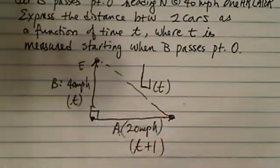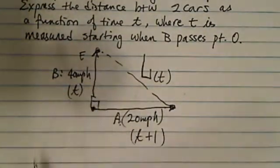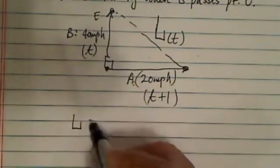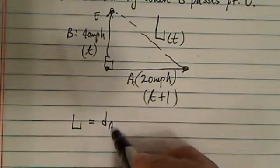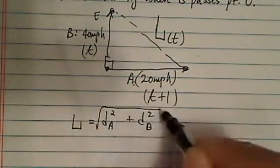So the distance between the two points, using Pythagorean theorem, is the square of this leg plus square of that leg, and square root of it. So let's get started. L is equal to distance A squared plus distance B squared, and we're going to square root this.